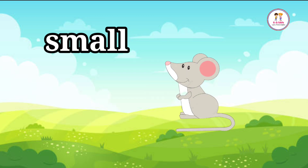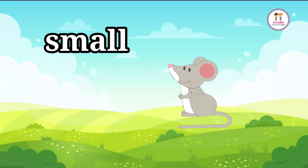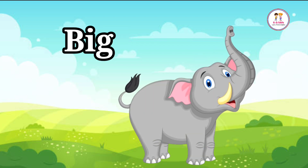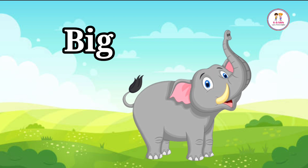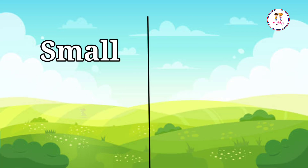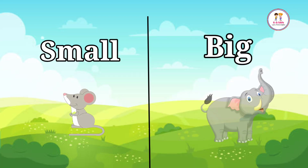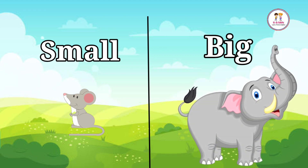Small. The rat is small. Big. Elephant is big. Small, opposite big.